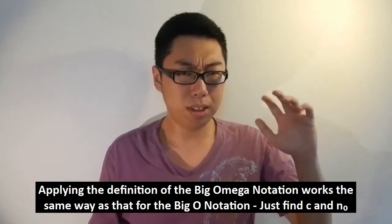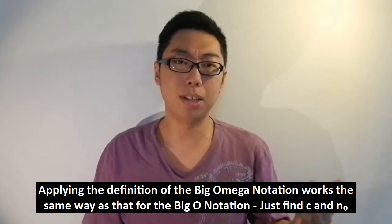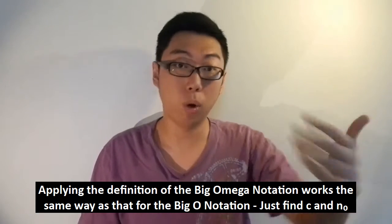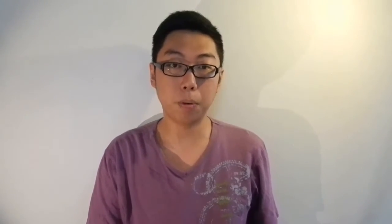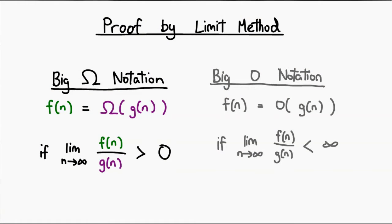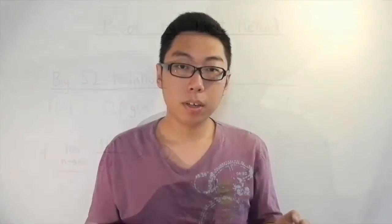The only difference is that the thing you introduce — in other words C·G(N) — is actually a lower bound, not an upper bound. Everything else is the same. Even when it comes to proving this using the limit method, it looks almost exactly the same. Instead of trying to make the limit less than infinity, this time we want to make the limit greater than zero. So just divide F(N) by G(N) and then take the limit as N goes to infinity. These two notations are in fact very similar.